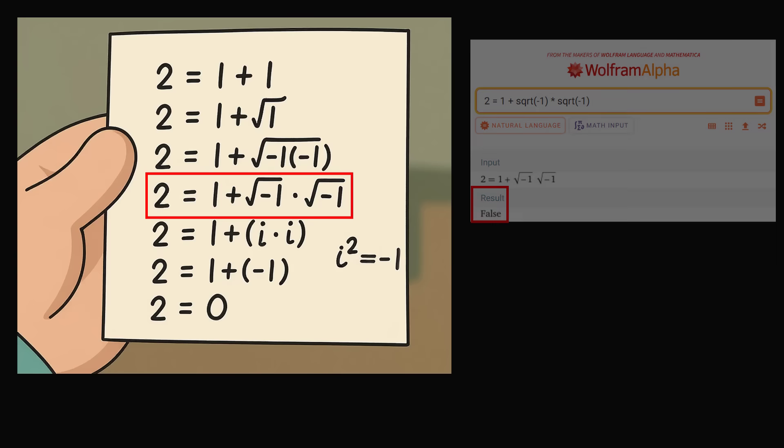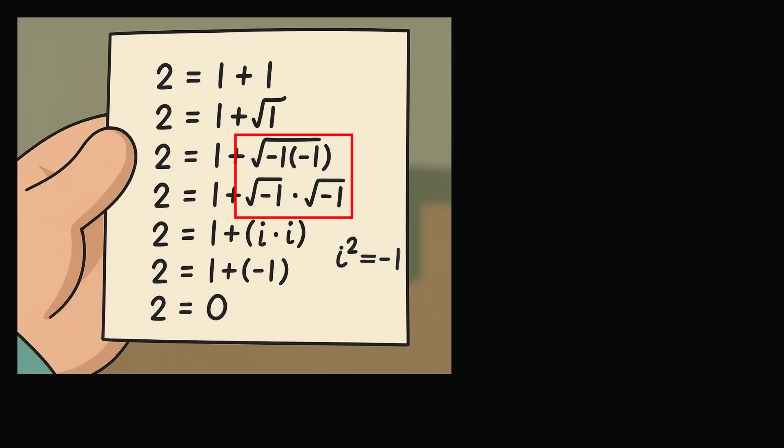So what is the mistake when we go from the third line to the fourth line, where we have applied the square root to each of these negative terms? It is not the case that the square root of the product of negative 1 with negative 1 is equal to the product of the square root of minus 1 with the square root of minus 1.